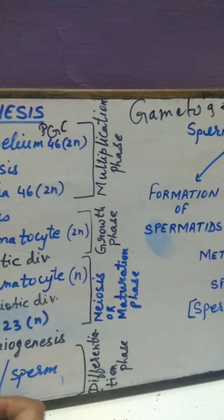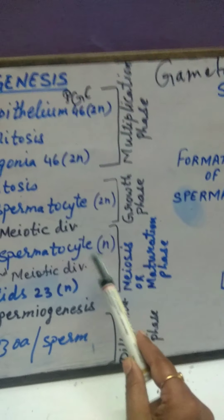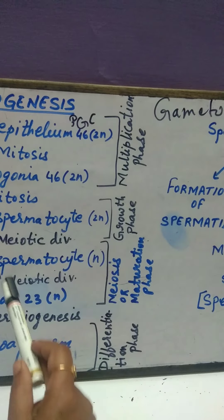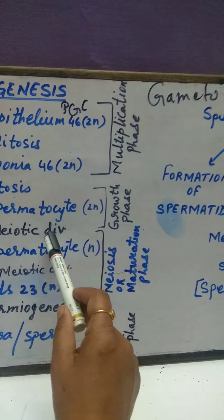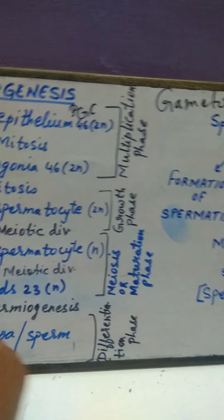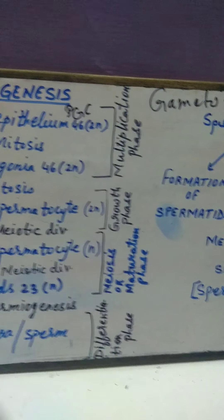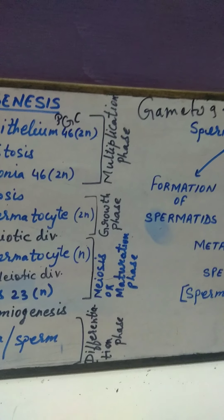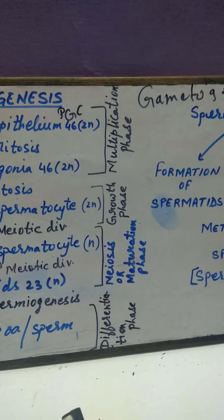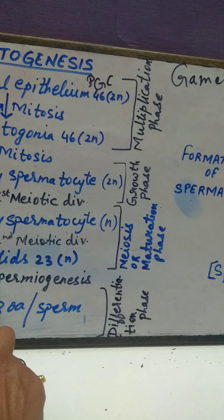This prepares cells for the maturation phase. During the maturation phase, the primary spermatocytes undergo first meiotic division and second meiotic division. After the first meiotic division, it gives rise to secondary spermatocytes, in which the cells remain connected by a cross bridge, that is, by cytoplasm.